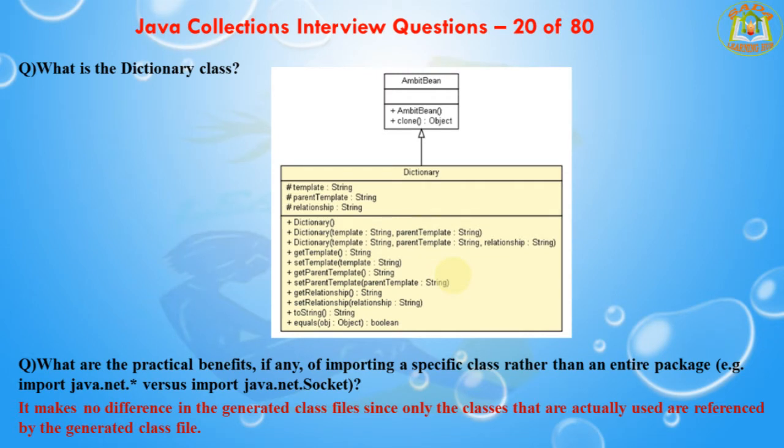The next question is: what is the Dictionary class? The Dictionary class provides the capability to store key-value pairs. It is a legacy collection framework. If you see here, the Dictionary class contains different methods and there are constructors — a default constructor and parameterized constructor — along with different methods available like get, set, getParent, and setParent templates.